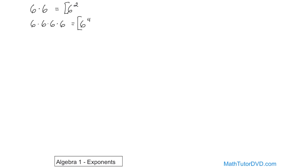Let's take a few more examples to get some more practice. What if you had 7 times 7 times 7? How would you write that as an exponent? Well, the number we're multiplying is 7.